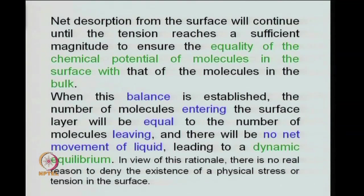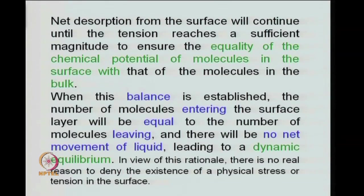Once the balance of chemical potentials is established, the number of molecules leaving the surface will be equal to the number entering the surface layer, and then there will be no net movement of liquid. This is to be understood as a dynamic equilibrium. Once the balancing of chemical potentials has taken place, we have no net movement of molecules from the surface to the bulk or from bulk to the surface, and under these conditions there should be no real reason to deny the existence of a physical stress or tension in the surface.